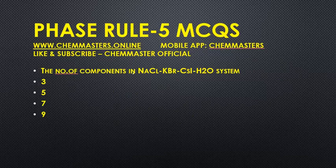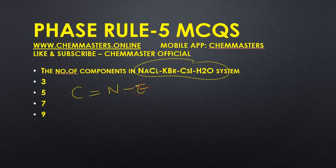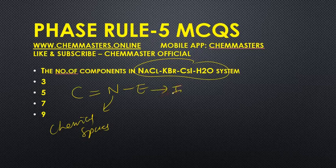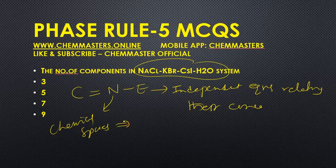The next important question: the number of components in a system of NaCl, KBr, cesium iodide (CsI), and H₂O. To find the number of components, we use the equation C = N - E, where N indicates the number of possible chemical species in the given system, and E indicates the number of independent equations relating their concentrations.